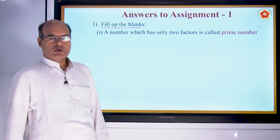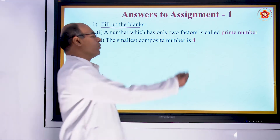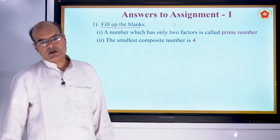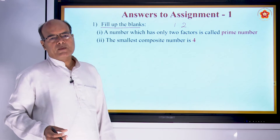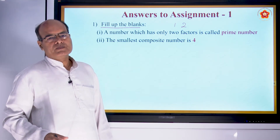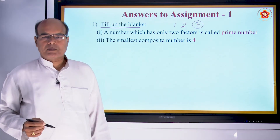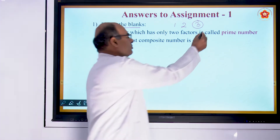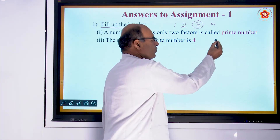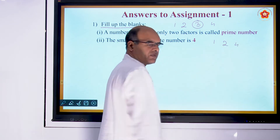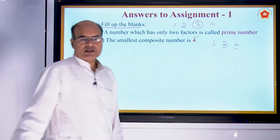The smallest prime number is 2. The second question is the smallest composite number. Remember, 1 is neither prime nor composite. 2 is the least prime number and the only even prime number. 3 is the second prime number and has only two factors. The next number is 4, which has three factors: 1, 2, and 4 itself. As 4 is the first number with three factors, 4 is the first composite number.